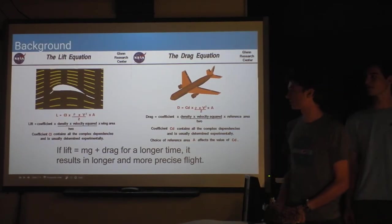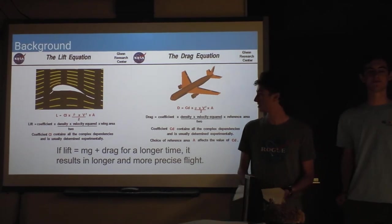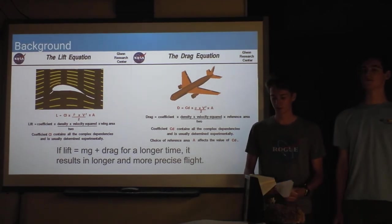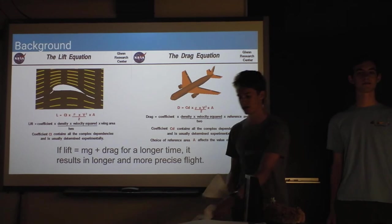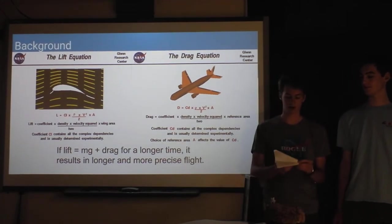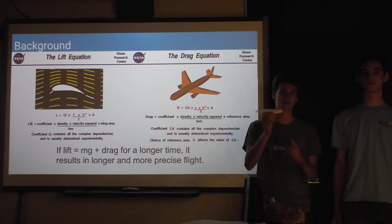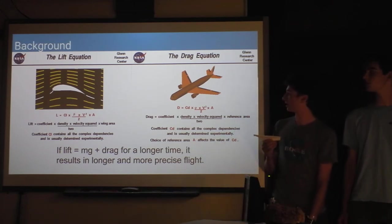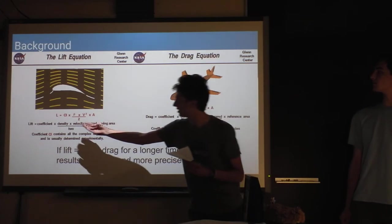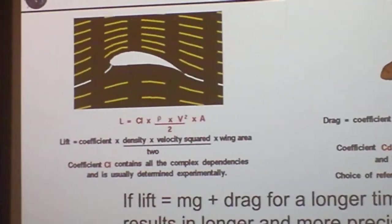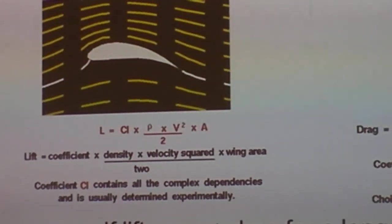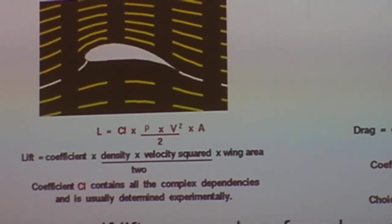Okay, so just really quickly we should probably address lift and drag. These are both forces and we have a diagram on the next slide. But when flying, lift is what's making the plane not just fall straight down. It's pushing it up because of air and it's this equation right here. And drag is what's pulling the plane down.